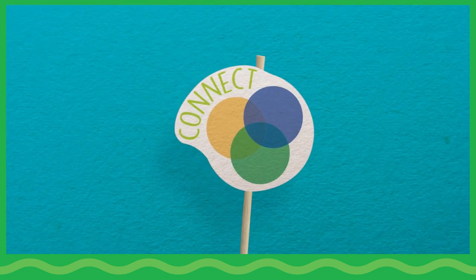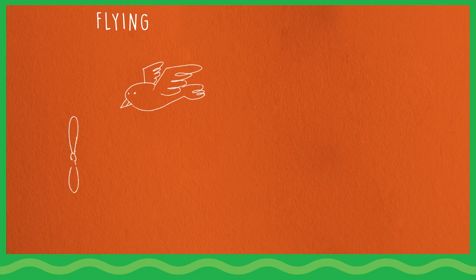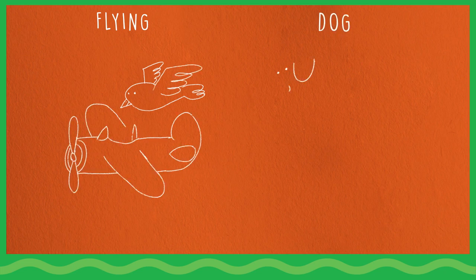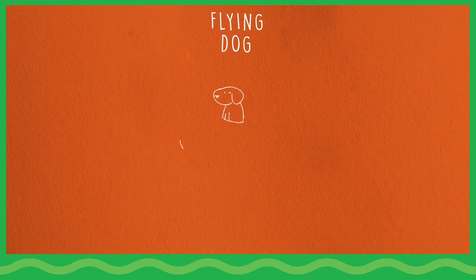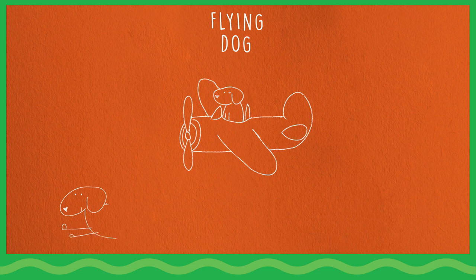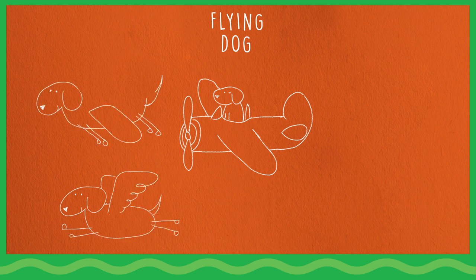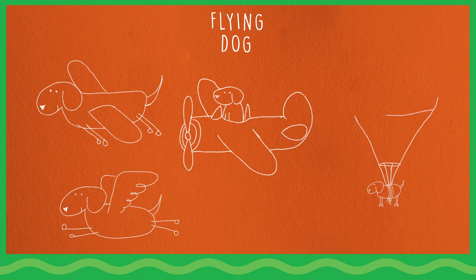Connect. Help children make connections between story sketching and other personal experiences where people heard or saw things differently. What other examples can children think of where people heard the same information but thought about different examples or ideas? How did those differences affect decisions?